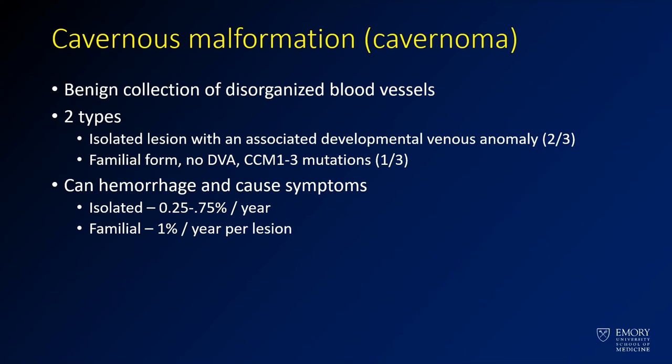They can hemorrhage and cause symptoms. The isolated lesions tend to hemorrhage at a risk of about 0.25 to 0.75% per year. The risk with familial lesions is a little bit higher and tends to go up with each additional lesion, so if you have more than one lesion the risk is considerably higher.